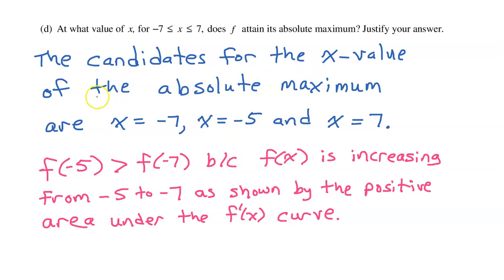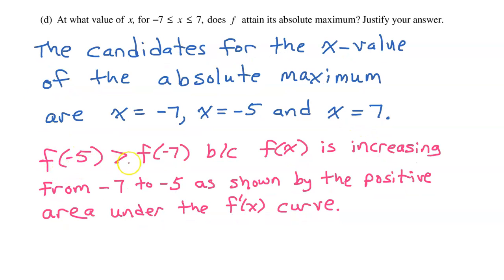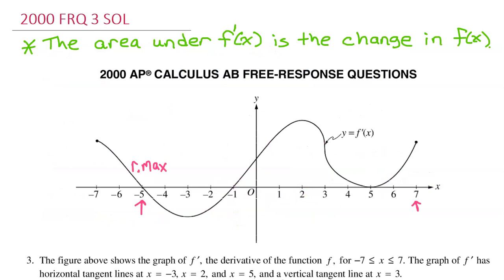The candidates for the absolute maximum are now x equals negative 5 and x equals 7. f of negative 5 is greater than f of negative 7 because f of x is increasing from negative 7 to negative 5, as shown by the positive area under the f prime curve. Now we need to determine whether f of x is greater at negative 5 or at positive 7.